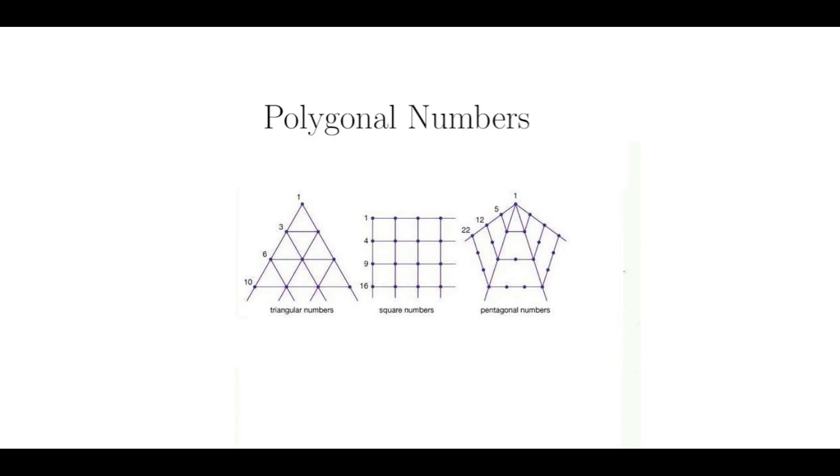For example, 10 is a triangular number but it is not square, while the number 9 is a square number but not triangular, yet the number 36 is both triangular and square. In fact, 36 is the 8th triangular number and the 6th square number.